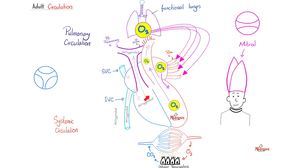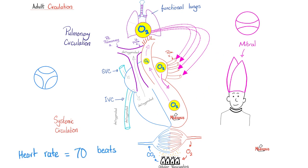Deoxygenated blood is now in the right ventricle. The right ventricle pumps it — systole — up through the pulmonary trunk, the right pulmonary artery for the right lung, and the left pulmonary artery for the left lung. The lung takes this deoxygenated blood, breathes the carbon dioxide out, and brings brand new oxygen in — that's another gas exchange, between the lungs and the pulmonary capillaries. This oxygenated blood then leaves the pulmonary capillaries, goes to the pulmonary veins, opens into the left atrium, which pumps it to the left ventricle via the mitral valve. You do this cardiac cycle about 70 times per minute.